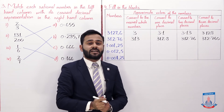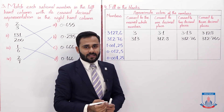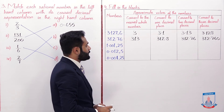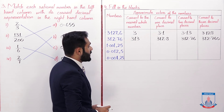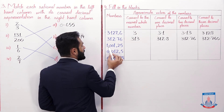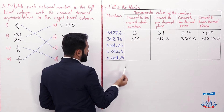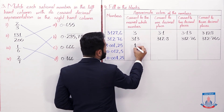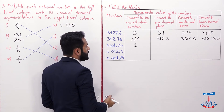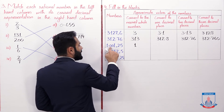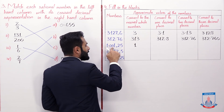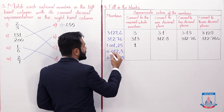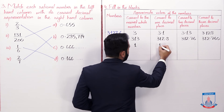The third number is 1.00125. Nearest whole number: after the decimal is 0, which is less than 5, so it stays 1. For one decimal place, the second digit is also less than 5, so it is 1.0.